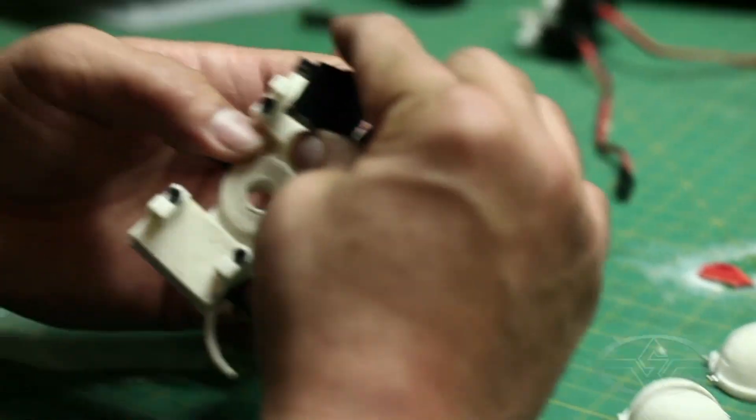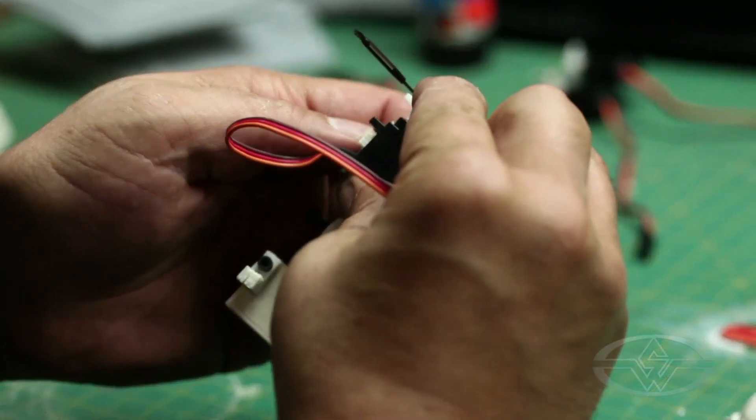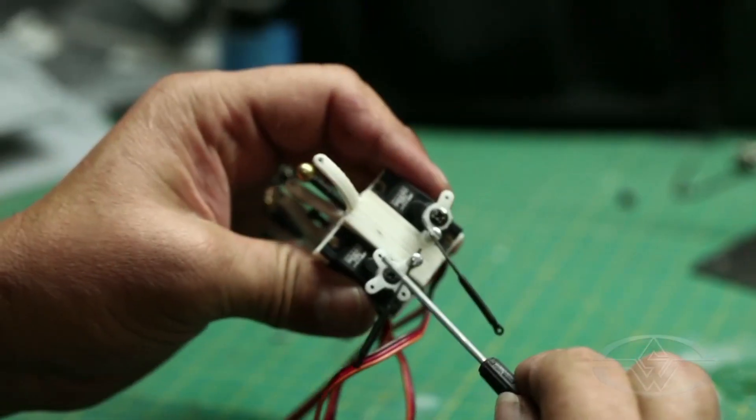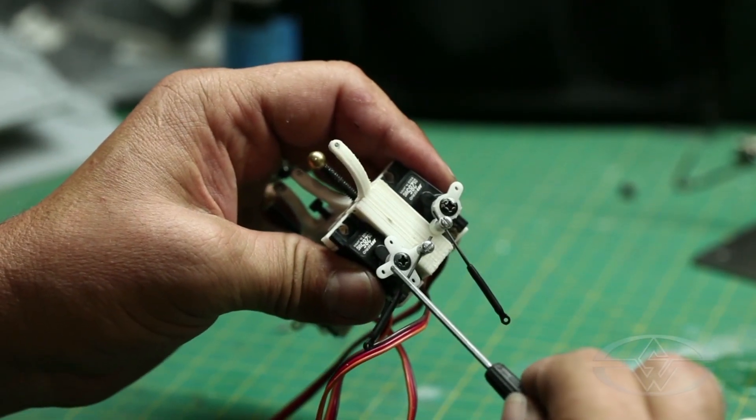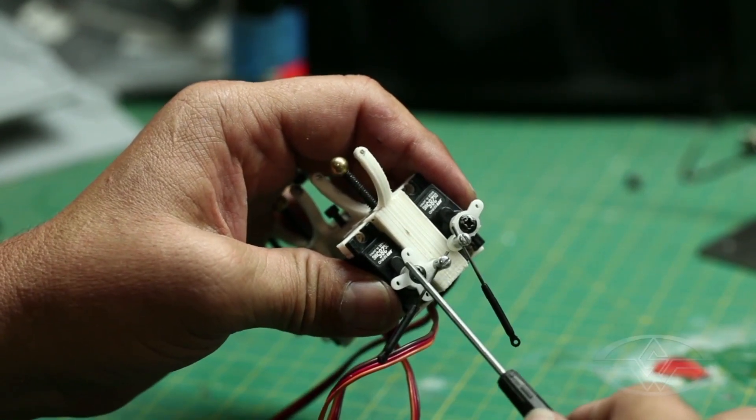We do that with all our servos and then we can go ahead and drop them right into our mechanism. Now what I did here, you notice that they're a little different. You can cut all of these extra ones off if it matters just to get a little tighter.